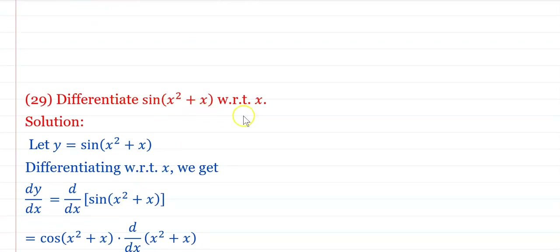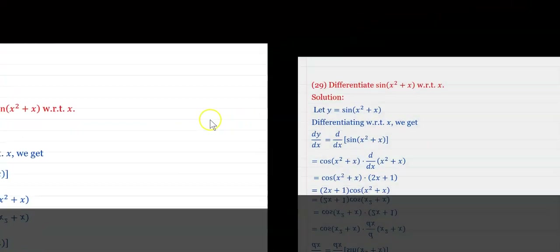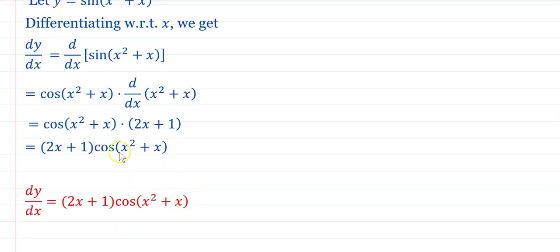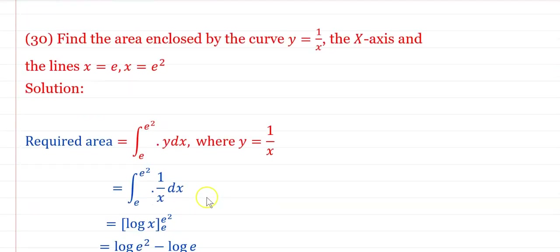Find dy/dx if y = sin(x² + x). This is a composite function. Differentiating: dy/dx = cos(x² + x) × d/dx(x² + x) = cos(x² + x) × (2x + 1). Therefore dy/dx = (2x + 1)·cos(x² + x).